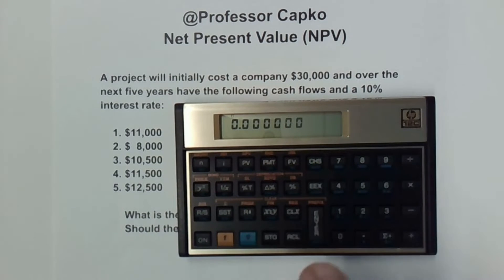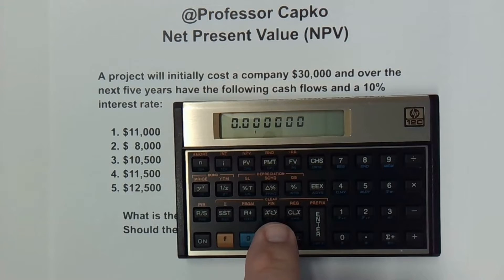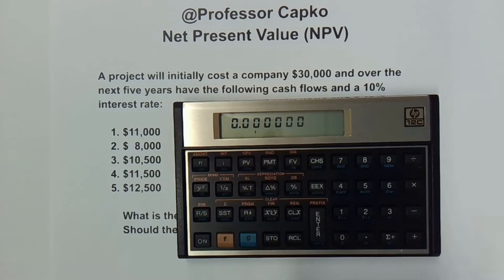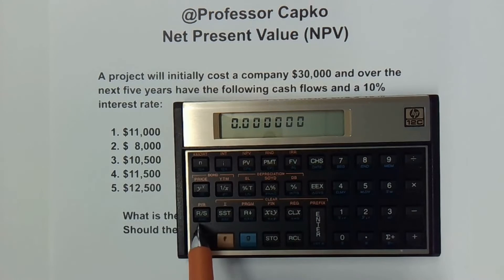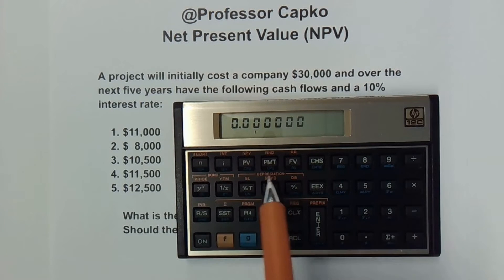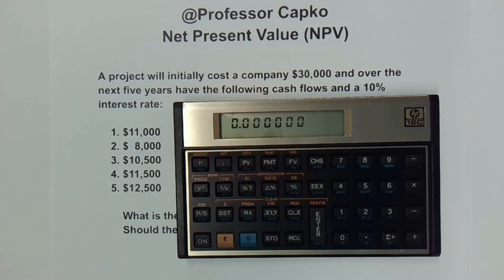The first thing we need to do on the HP12C is clear out the financial memory. We hit this little orange F button first, and then you see 'Clear FIN' — clear financial — that's the one we want to push. Anytime you hit the F button, you can see the little F appears. If you hit the G button, the G appears. The orange functions are accessed with F, and the blue functions on the bottom of the keys are accessed with G. I'm going to clear everything by hitting CLX, and we've cleared out the memory.